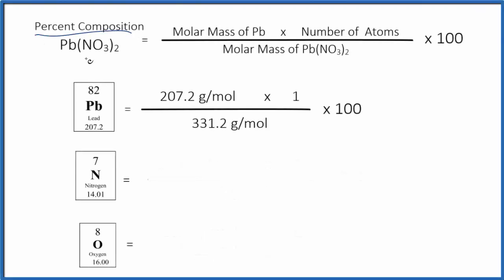Let's find the percent composition for each element here in Pb(NO3)2, that's lead two nitrate. So we'll use this general formula here.